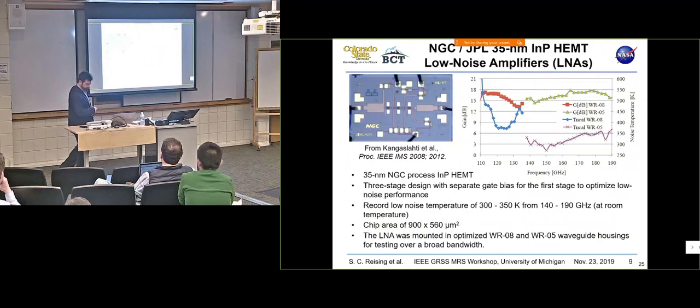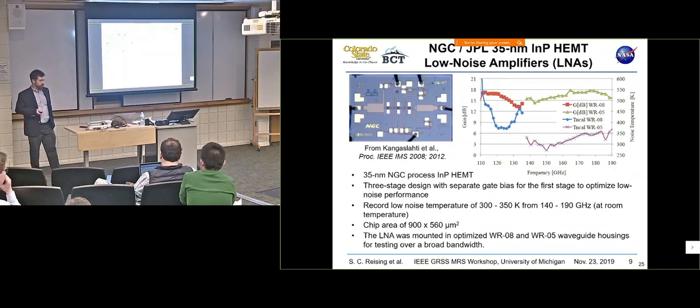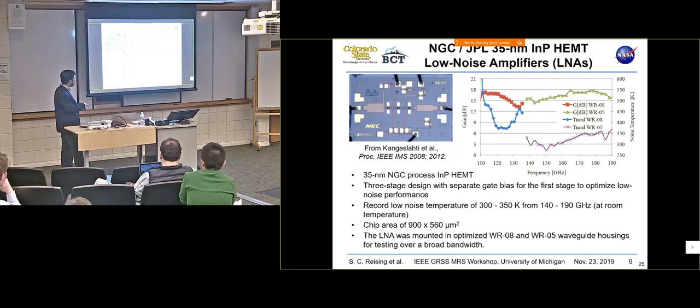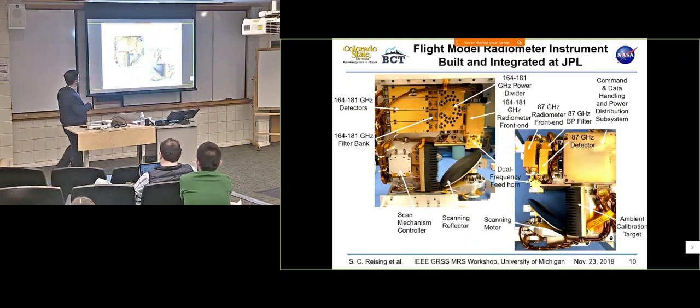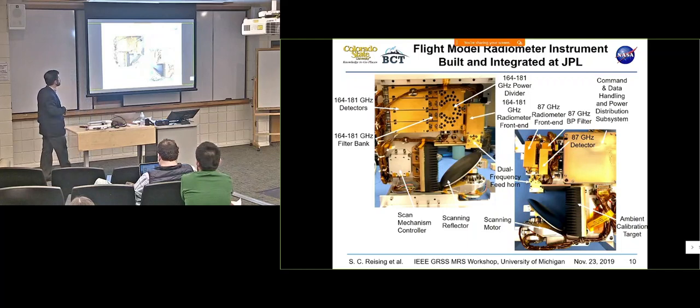The calibration target we view is a Zacks millimeter wave calibration target that's been flown in space before. Our radiometers are based on some low noise amplifiers that showed the record lowest noise temperature of 300 to 350 Kelvin in this frequency range from 140 to 190 gigahertz. They were produced at Northrop Grumman in California and designed in collaboration with JPL. This is a 35 nanometer indium phosphide HEMT process.